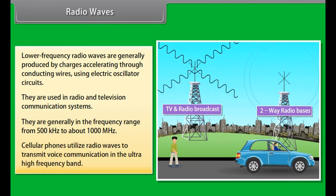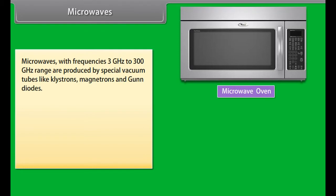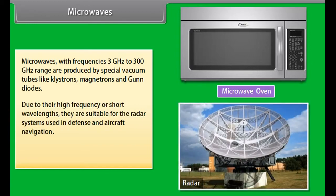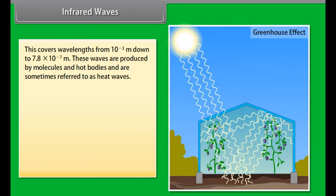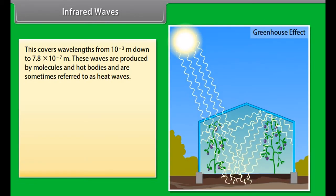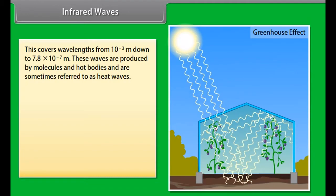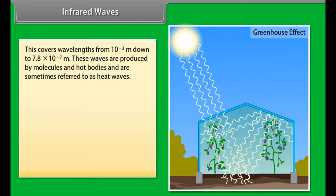Electromagnetic spectrum. The classification of EM waves according to frequency is the electromagnetic spectrum. There is no sharp division between one kind of wave and the next. The classification is based on how the waves are produced or detected. Let us describe these different types of electromagnetic waves in order of decreasing wavelengths. Radio waves. Lower frequency radio waves are generally produced by charges accelerating through conducting wires using electric oscillator circuits. They are used in radio and television communication systems. They are generally in the frequency range from 500 kHz to about 1000 MHz.